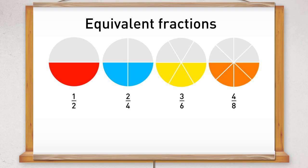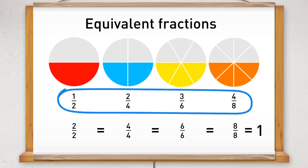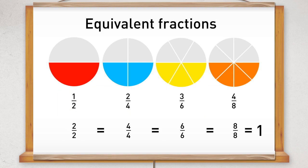Using the whole circle, we can see that two halves is equal to four quarters, which is equal to six sixths, which is equal to eight eighths, which is equal to one whole circle. So although these fractions all look different, they are in fact the same size as each other.